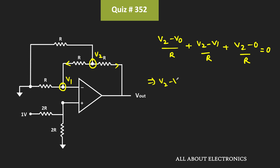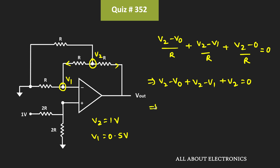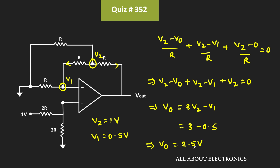Simplifying: V2 − Vout + V2 − V1 + V2 = 0. We know V2 = 1V and V1 = 0.5V, so Vout is equal to 3V2 − V1, which is equal to 3V − 0.5V. Therefore the output voltage is equal to 2.5V.